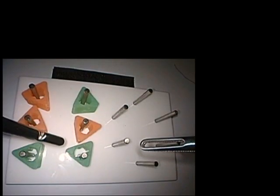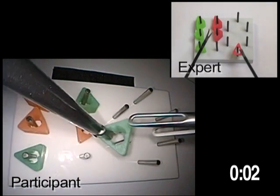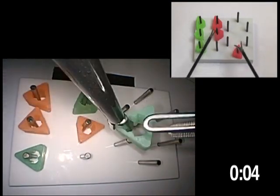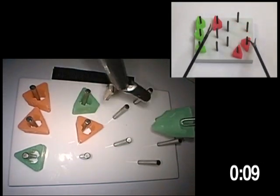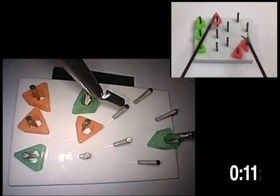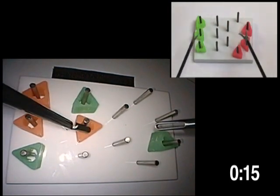Peg transfer: Transfer the objects one by one from one side of the board to the other. Lift each object with your non-dominant hand and transfer it in mid-air to your dominant hand. There is no importance placed on the color of the objects or the order they are placed in.